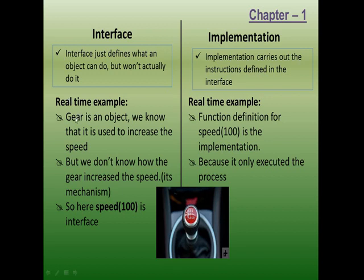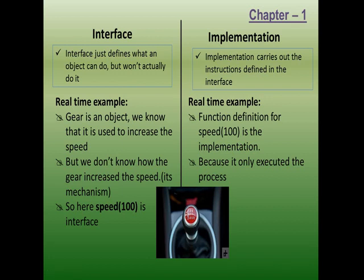Now, take the object 'gear'. We know that it is used to increase the speed, but we don't know how the gear increases the speed. I know the gear is an object and that moving the gear automatically increases the speed, but I don't know the mechanism — how it increases the engine speed. Up to this level, it is called the interface. Implementation carries out the instructions defined in the interface — it is the execution part. So interface is like a function prototype.